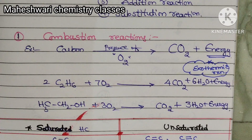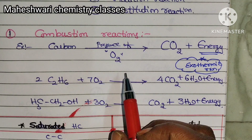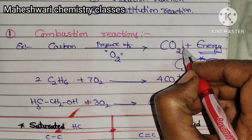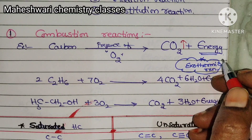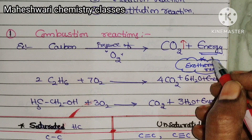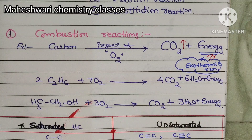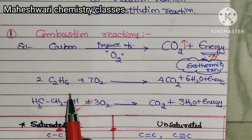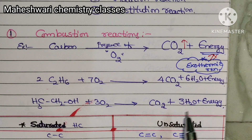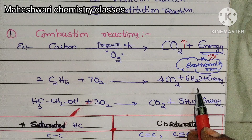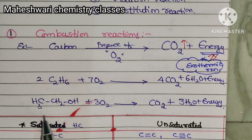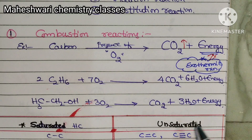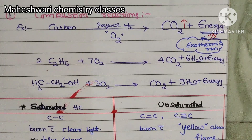Combustion reactions: carbon in the presence of oxygen undergoes a burning reaction and forms carbon dioxide gas, releasing energy — it is an exothermic reaction. Ethane reacts with oxygen and forms carbon dioxide, 6 moles of water, and energy. Ethyl alcohol reacts with oxygen and also forms carbon dioxide, water, and energy.